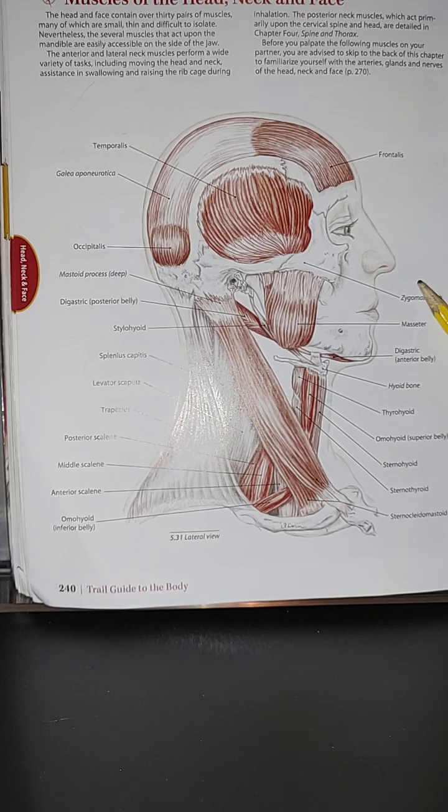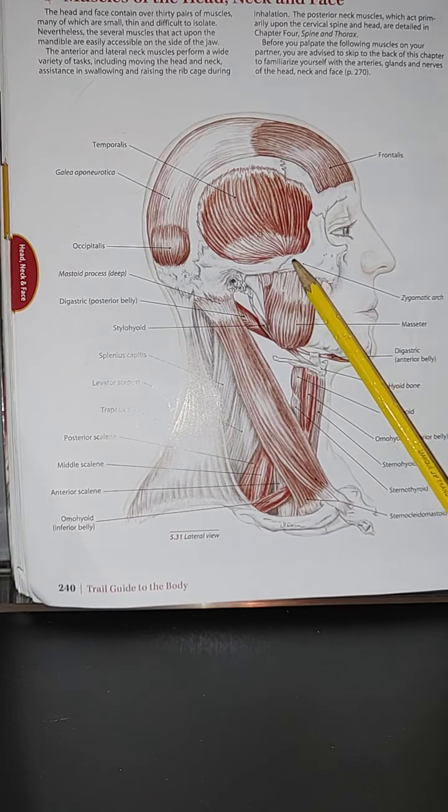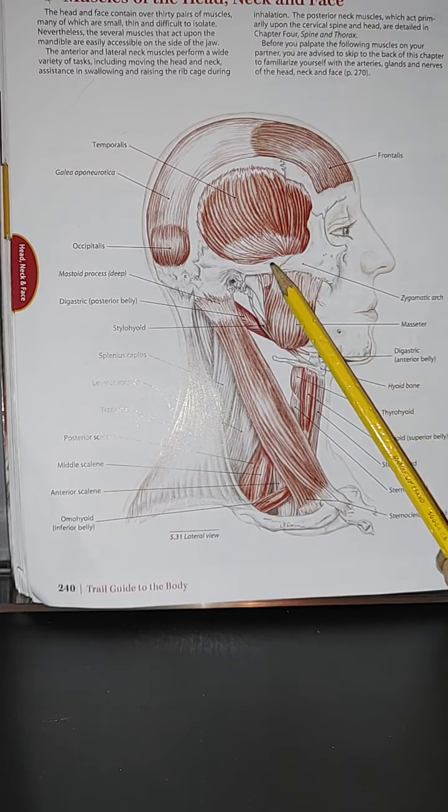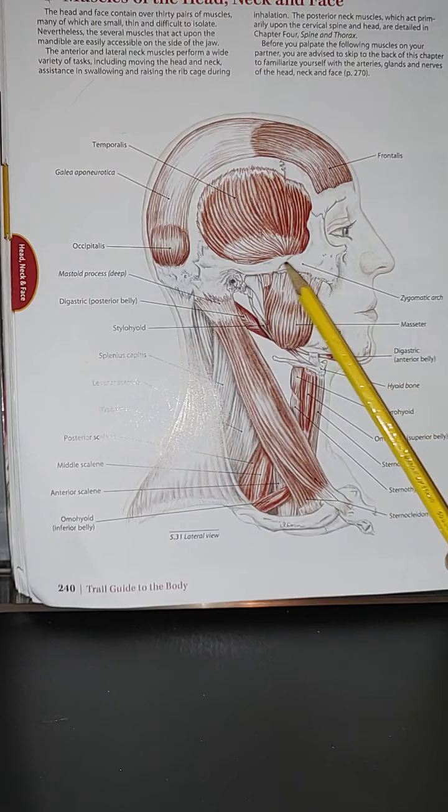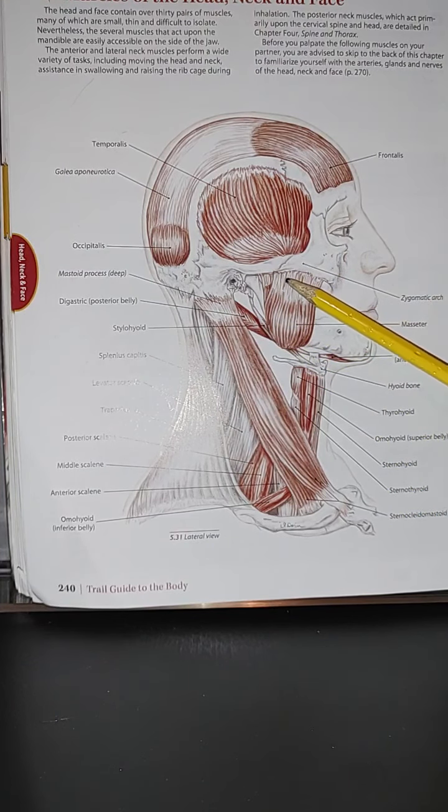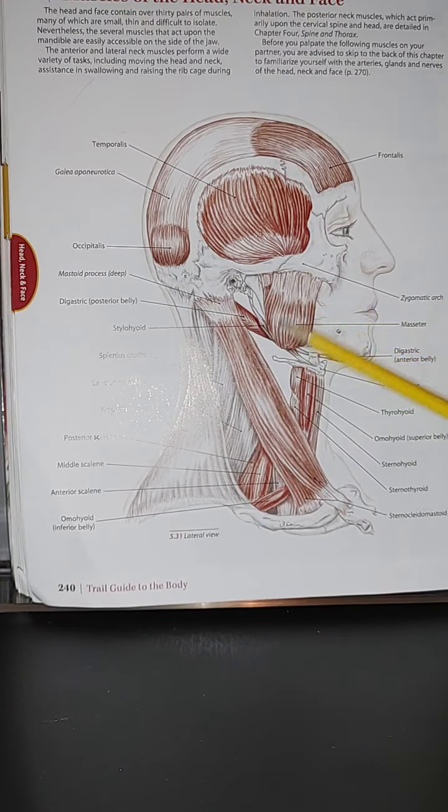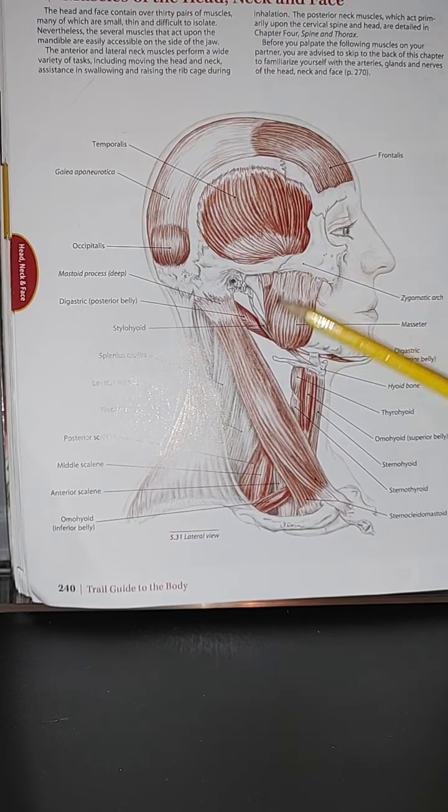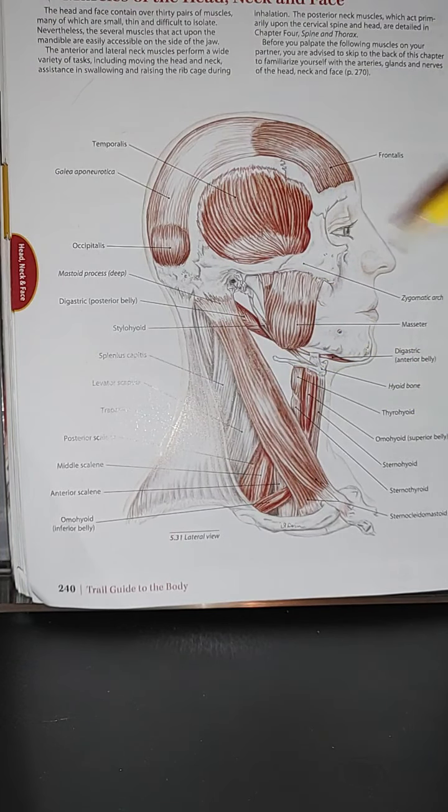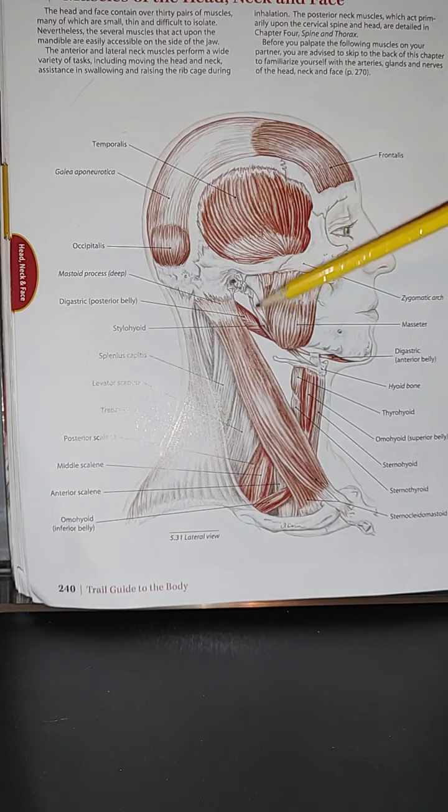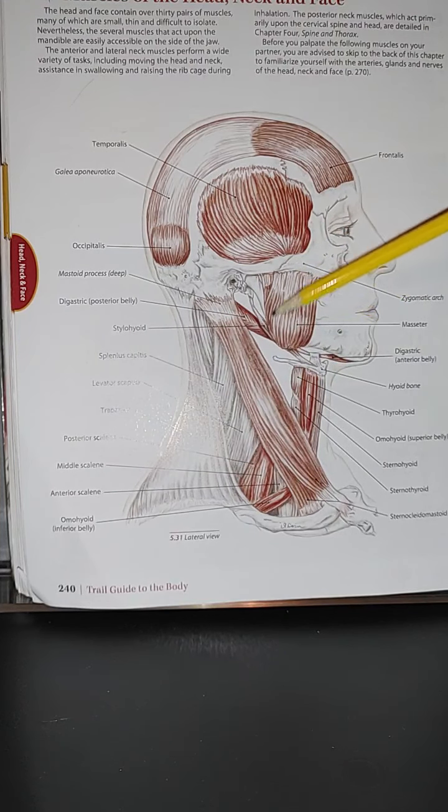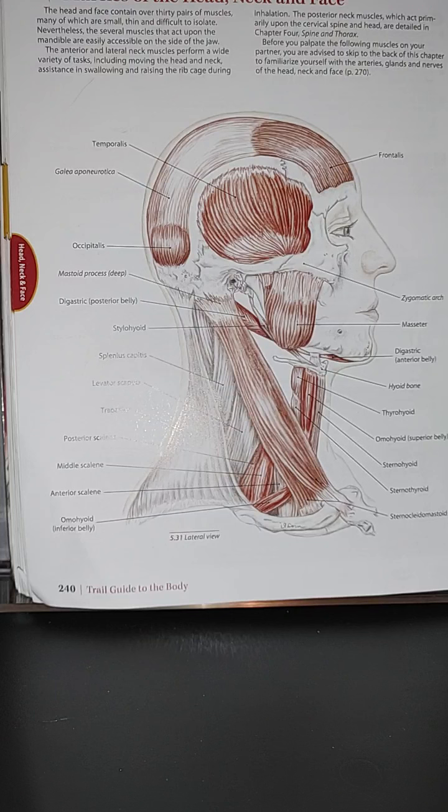And of course, we do have here the zygomatic arch. That's a very important landmark. And of course, the masseter. The masseter is a very strong muscle usually. As a therapist, we know that if we are to deal with some oral massage, we're going to make sure that we do know the history of the client.